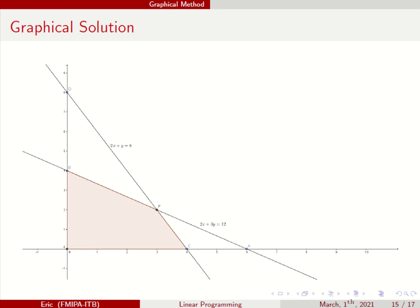Let's look at the first case. Actually, this is 3x plus 2y — the objective function is 3x plus 2y. This is the case when you have one solution, only one solution.